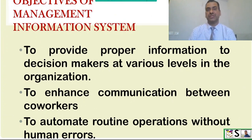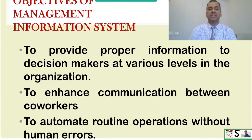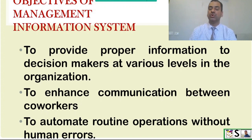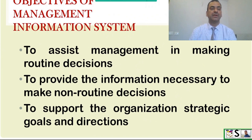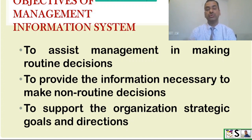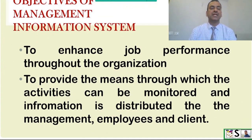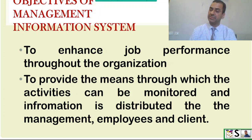The objectives of management information system are very important for all organizations from top to bottom. The main objectives are: to provide proper information to decision makers at various levels in the organization; to enhance communication between co-workers; to automate routine operations without human errors; to assist management in making routine decisions; to provide the information necessary to make known routine decisions; to support the organization's strategic goals and directions; and to enhance job performance throughout the organization.